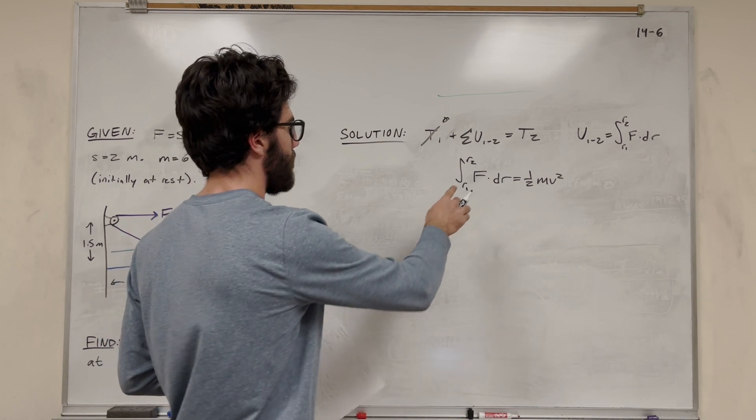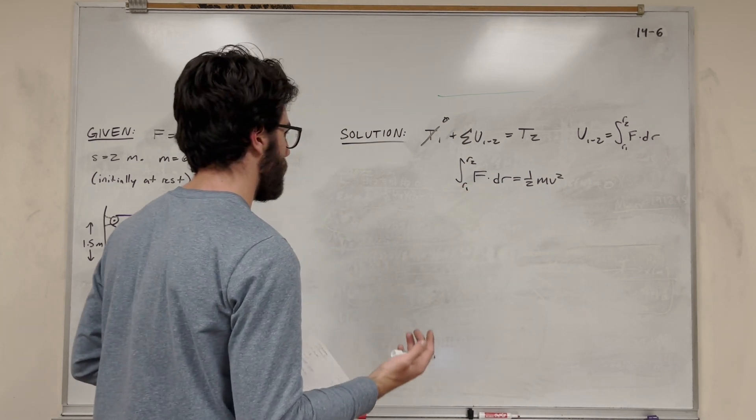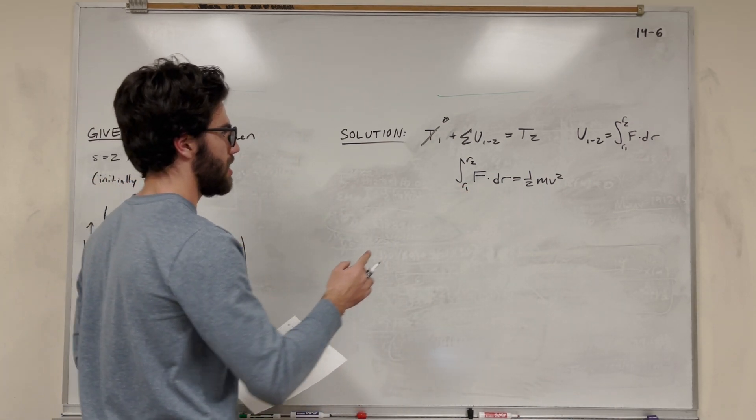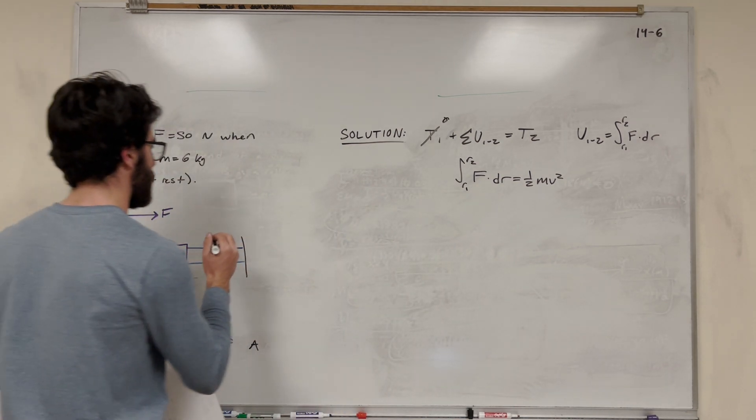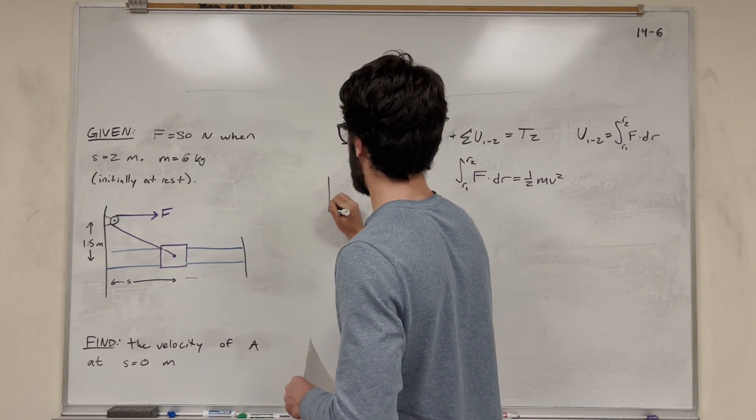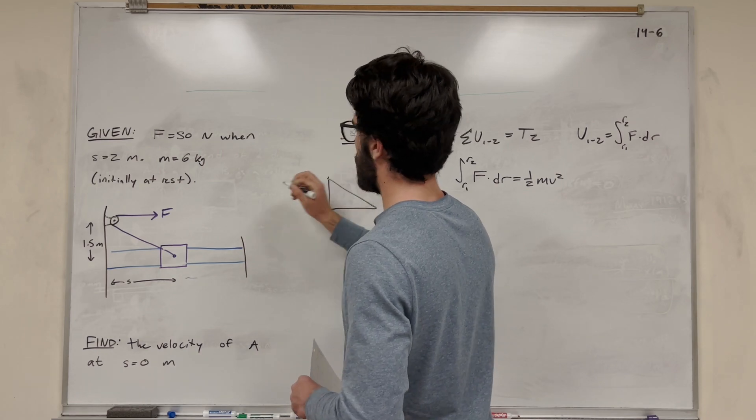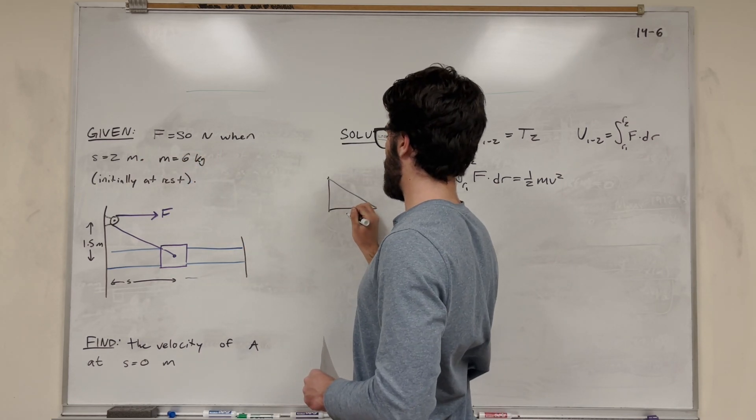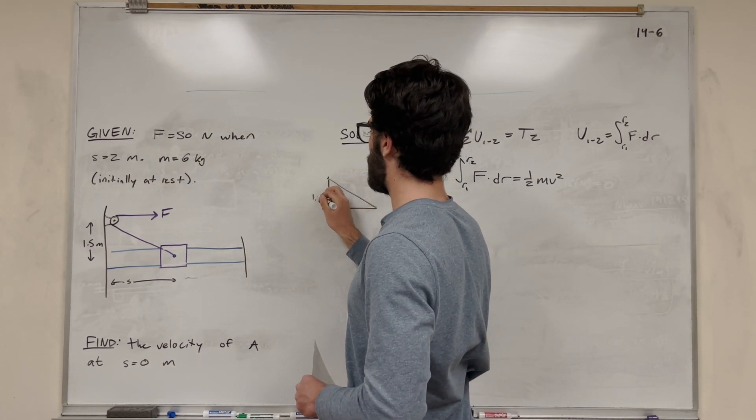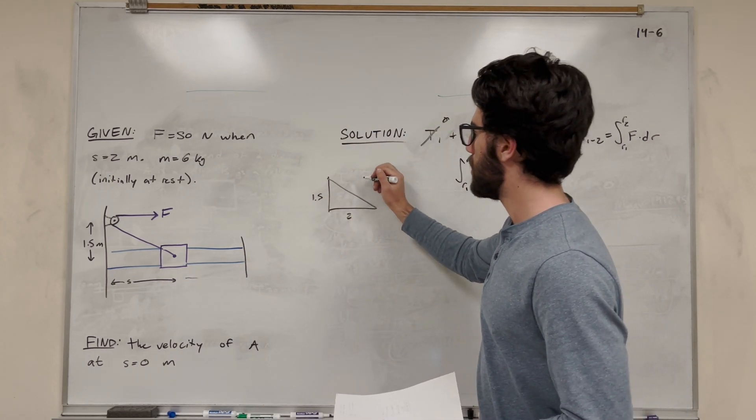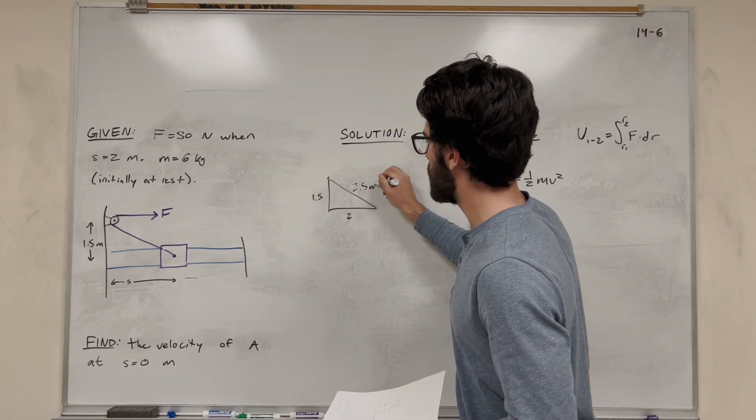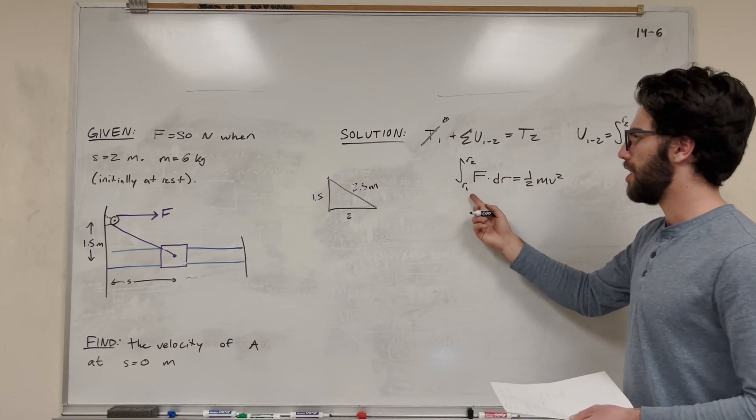So how do we solve this integral? We need to find what our bounds are. Radius is going to be the length of this line here. Let's start with initially. Let's look at a triangle of what it looks like initially. We know we start with s is 2 meters, so the base is 2, and the height is 1.5. Now use Pythagorean theorem to find the hypotenuse, and you're going to find that this is 2.5 meters.